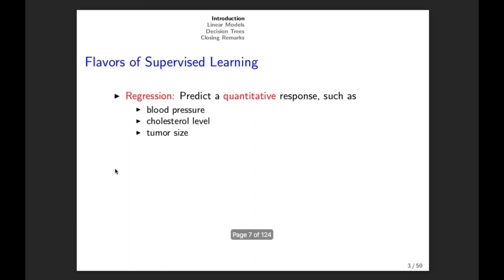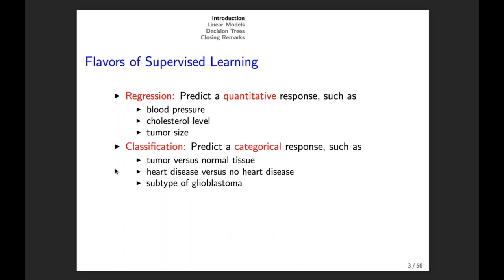There are a couple different flavors of supervised learning. The best known is regression, where you want to predict a quantitative response such as blood pressure, cholesterol level, or tumor size — where Y is quantitative. The other main flavor is classification, where we are trying to predict a categorical response such as tumor versus normal tissue, heart disease versus no heart disease, or subtype of disease. The only difference between regression and classification is the type of your response Y.